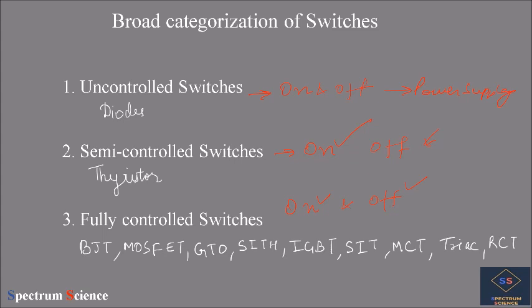Fully controlled switches allow control of both on and off states. These include BJT, MOSFET, GTO, SITH, IGBT, SIT, MCT, TRIAC, and RCT. TRIAC and RCT are bi-directional devices, meaning current can flow in both forward and reverse directions. The full forms are: BJT — Bipolar Junction Transistor, MOSFET — Metal Oxide Semiconductor Field Effect Transistor, GTO — Gate Turn-Off Thyristor, SITH — Static Induction Thyristor, IGBT — Integrated Gate Bipolar Transistor, SIT — Static Induction Transistor, MCT — MOS Controlled Thyristor, and RCT — Reverse Conducting Thyristor.